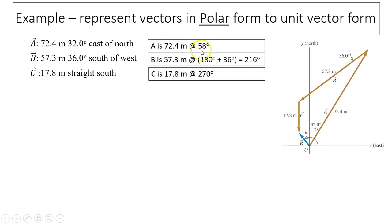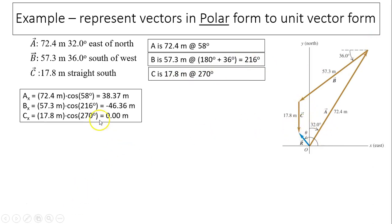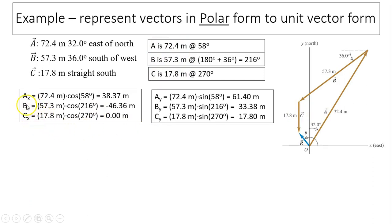What we did first was we changed the angle with only the positive x, so it's easier for us to find the components. So a is 7.2 at 58 degrees. Remember 58 degrees? I got that from 90 minus 32. Here is 216 because that's 180 plus 36. And over here is going down 270.